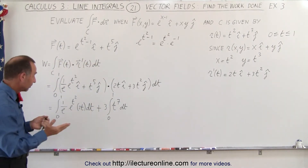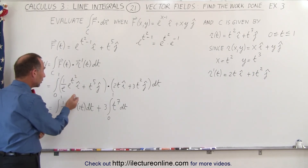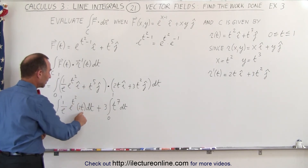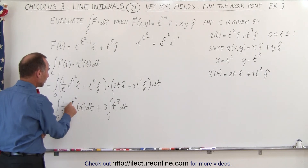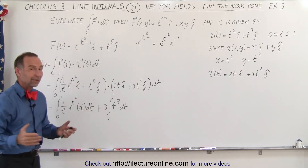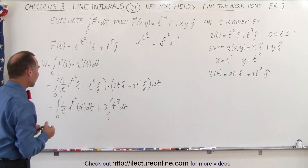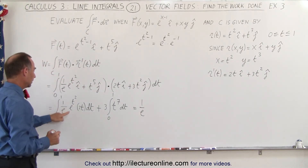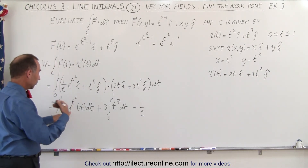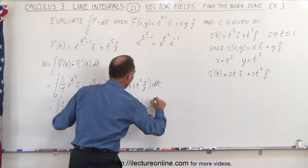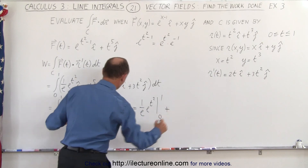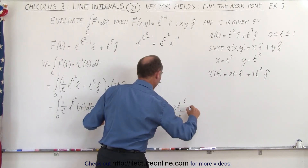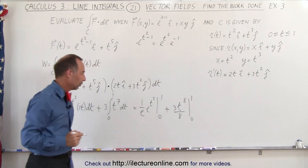The reason I wrote it this way: to integrate e to the t squared, we need to have 2t dt present, since the derivative of the exponent t squared is 2t, and the proper differential for e to the t squared is exactly 2t dt. Fortunately we have that, so we can integrate directly. This becomes 1 over e times e to the t squared, evaluated from 0 to 1, plus 3t to the eighth divided by 8, also evaluated from 0 to 1.